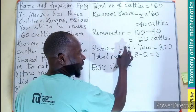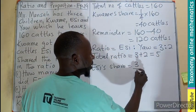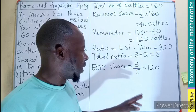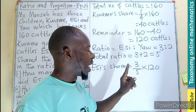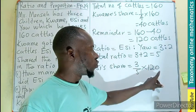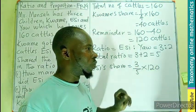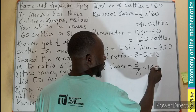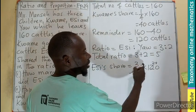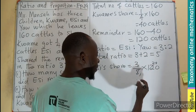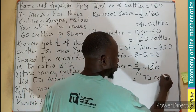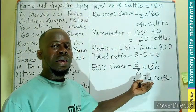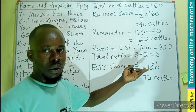We find Ac's share as the ratio corresponding to Ac — which is 3 — divided by the total ratio of 5, times the 120 cattle to be shared. 5 goes into 120 twenty-four times, then 24 multiplied by 3: 3 times 20 is 60, plus 3 times 4 is 12, giving us 72. So Ac receives 72 cattle.